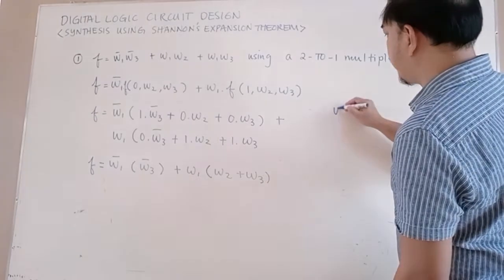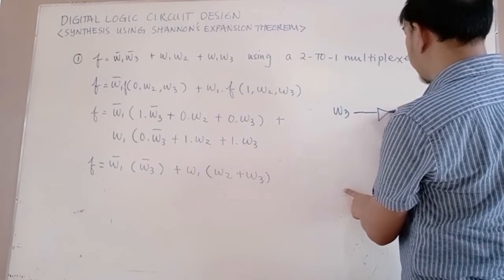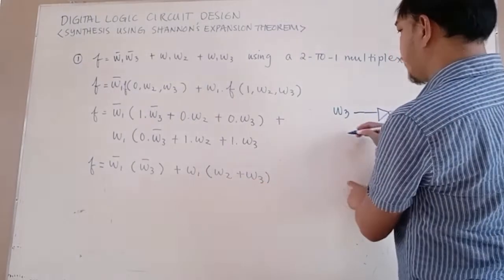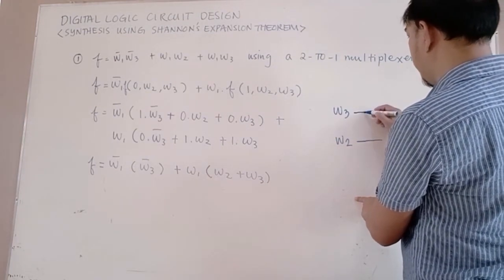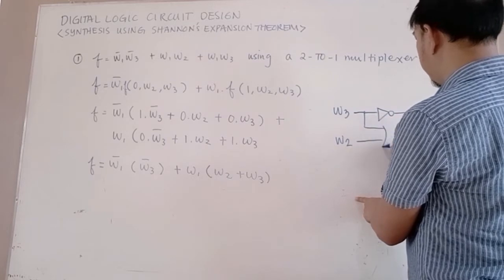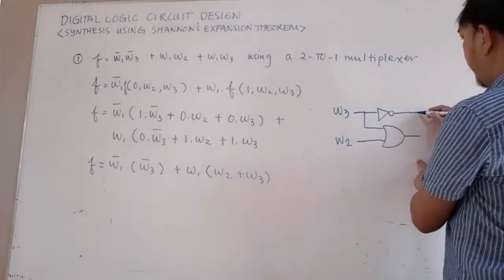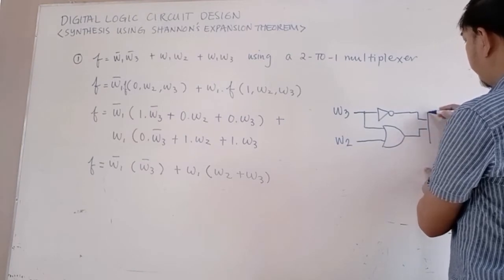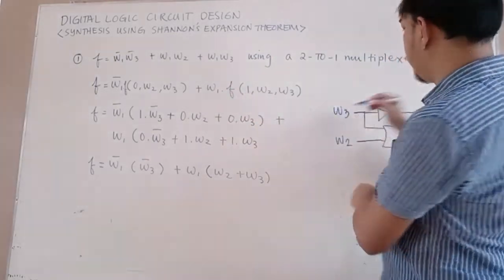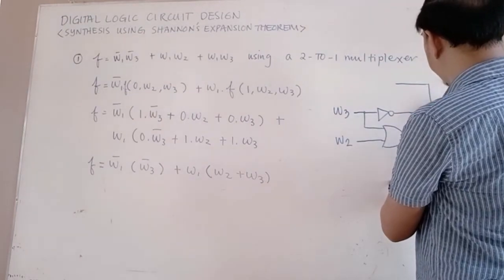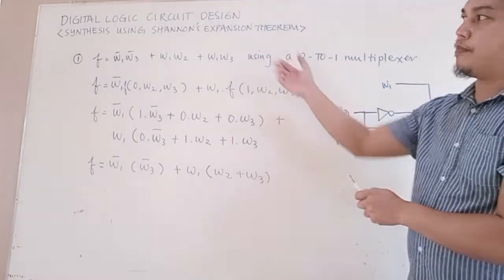The resulting circuit has W3-bar and W2 as inputs — specifically, W2 plus W3 is computed using an OR gate. That result feeds into the 2-to-1 multiplexer with function F, where W1 is the select input. This is the equivalent circuit of the given function.